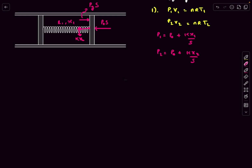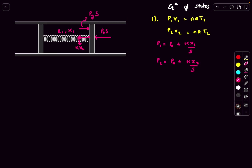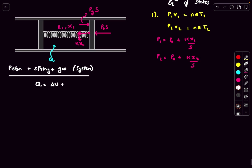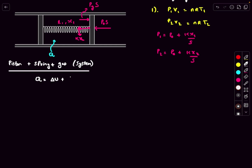Now let's write down an energy balance equation. We need to find the heat Q supplied to the gas. Taking the pistons, spring, and gas as a system: the heat Q changes the internal energy of the gas (increasing its temperature) and does work elongating the spring, stored as change in spring potential energy delta-U_spring.